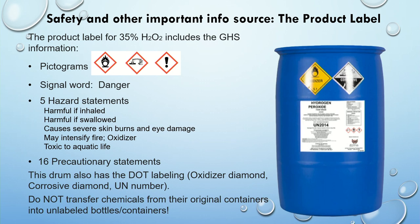Another source of safety information is the container label. This can be found on the product or container label and it's going to include pictograms, hazard statements, and precautionary statements. This is a picture of a drum of 35% hydrogen peroxide — it also has DOT labeling from the Department of Transportation. The information on this label is important and more readily accessible than your SDS. You should never transfer hazardous chemicals from original containers into an unlabeled bottle, and preferably not transfer them at all.